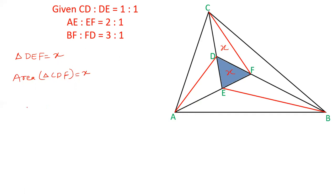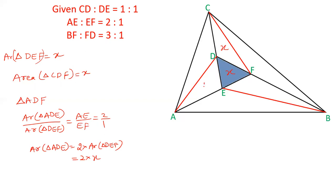Now let us take triangle ADF. In this there are two triangles. Area of triangle ADE upon area of triangle DEF will be equal to the ratio of the base, AE and EF. The ratio of AE and EF is 2:1. Area of DEF we have assumed as X. So area of triangle ADE will be twice X, 2 times X, so that is 2X. This area is 2X.